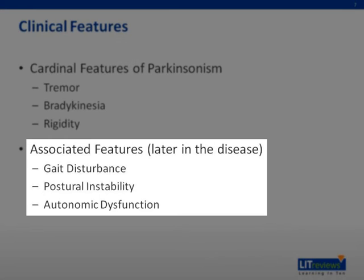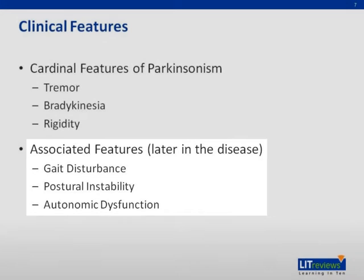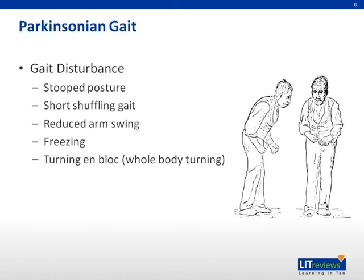Other additional features include gait disturbance, postural instability, and autonomic dysfunction causing postural hypotension, gastroparesis, constipation, erectile dysfunction, urinary urgency, and incomplete bladder emptying. The Parkinsonian gait is easily recognizable because of the stooped posture, short shuffling steps, reduced arm swing, tendency for freezing, and turning en bloc.